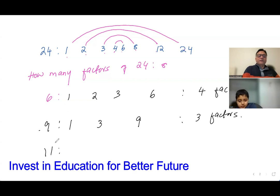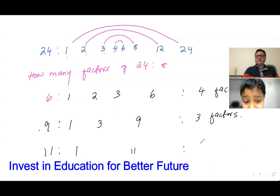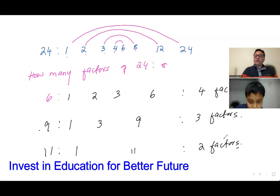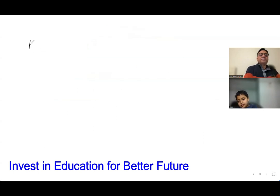If I take 11, how many factors will 11 have? You can do 1 times 11, but you can't multiply 2 or 3 into it. So 11 has only two factors. We call these numbers prime numbers.